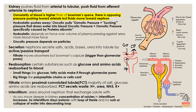Now, after filtration is done, we move to secretion. The Bowman's capsule has finished filtration and obtained what it needed from the blood. Nephrons secrete salts, acids, bases, and urea into the tubules by active or passive transport. The filtrate now moves from the Bowman's capsule to the PCT, DCT, and the descending and ascending loop of Henle.